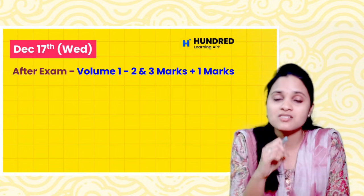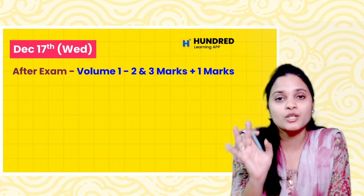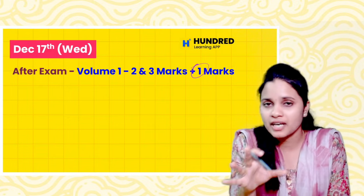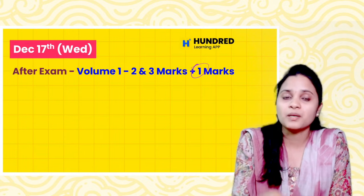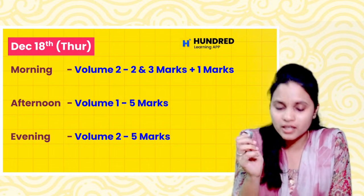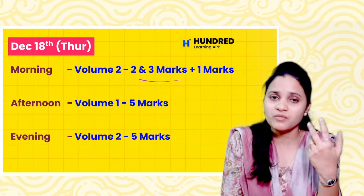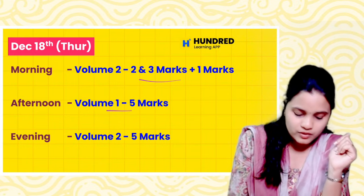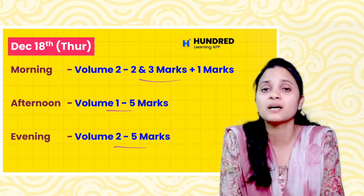December 17th — if you come to the max exam, you will have a little relaxation. You will have 2 and 3 marks, including 1 mark. So if you don't study 1 marks, you will be affected. In the final day, 1 mark must be done — that's why we lose marks. On December 18th, in the morning during school time, you will focus on that. Next afternoon you will finish the volume of 5 marks, and in the evening you will complete the volume of 5 marks.